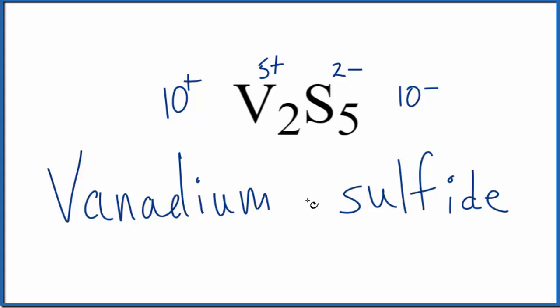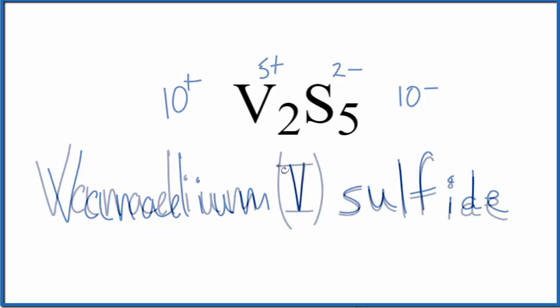Put a Roman numeral 5 between the vanadium and the sulfide. And that makes the name for V2S5, vanadium 5 sulfide.